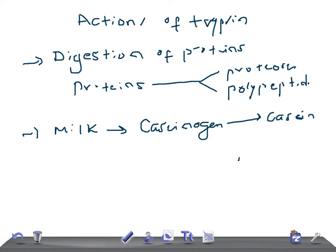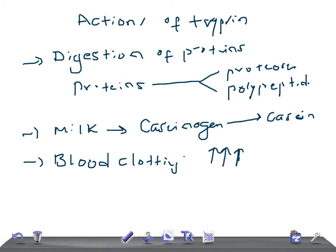Trypsin also has an effect on blood clotting — it accelerates blood clotting. Another important function of trypsin is that it activates other enzymes of the pancreatic juice, such as converting chymotrypsinogen into chymotrypsin.